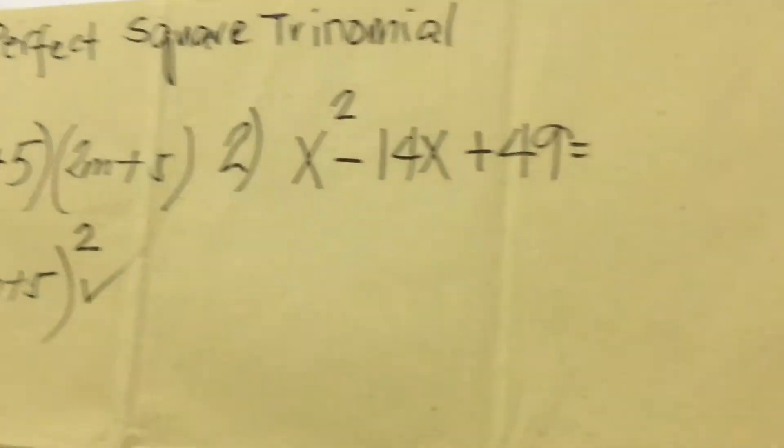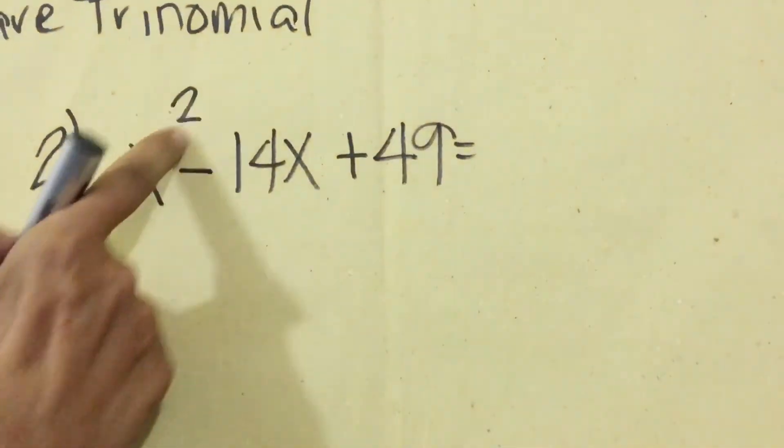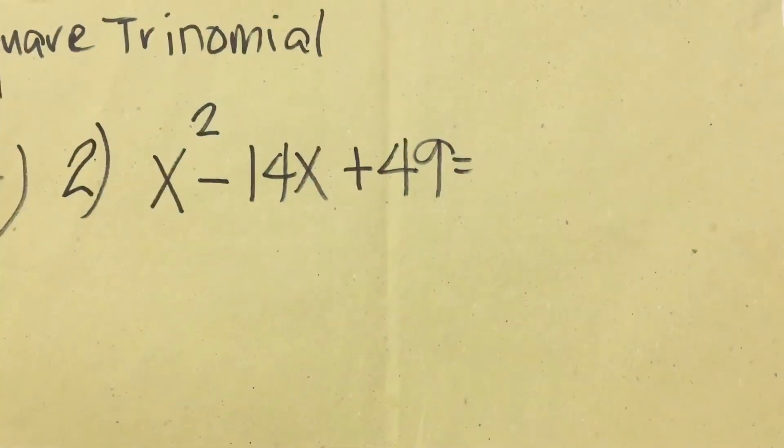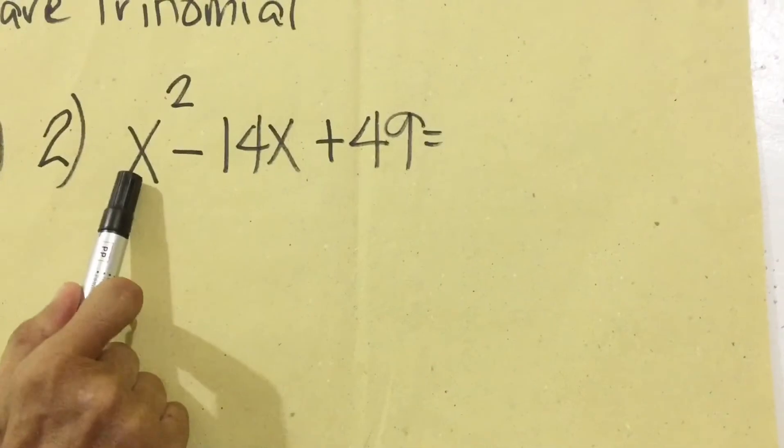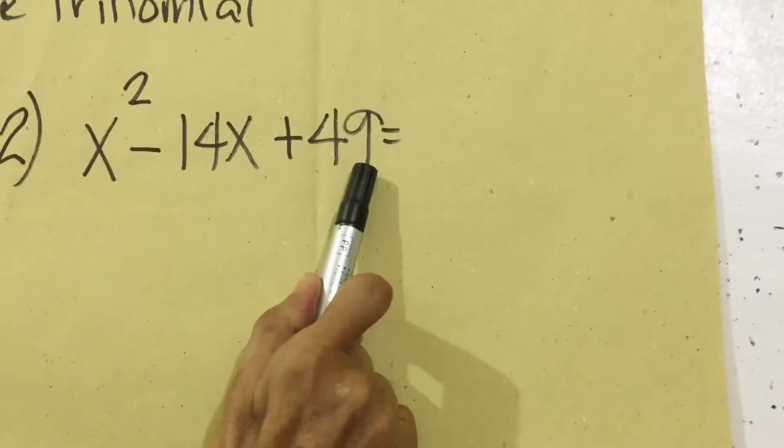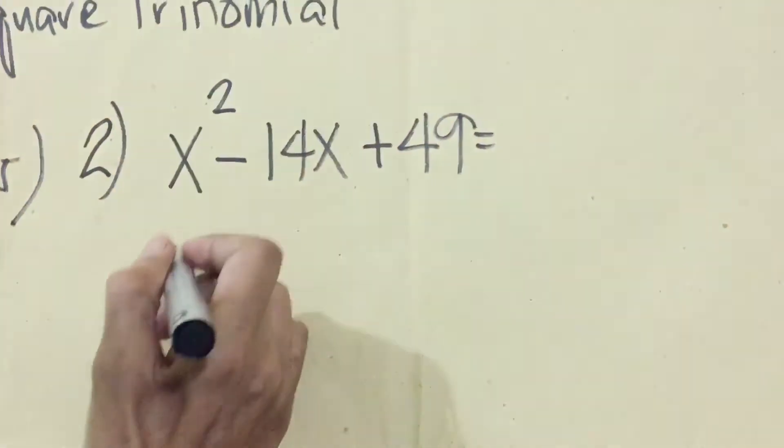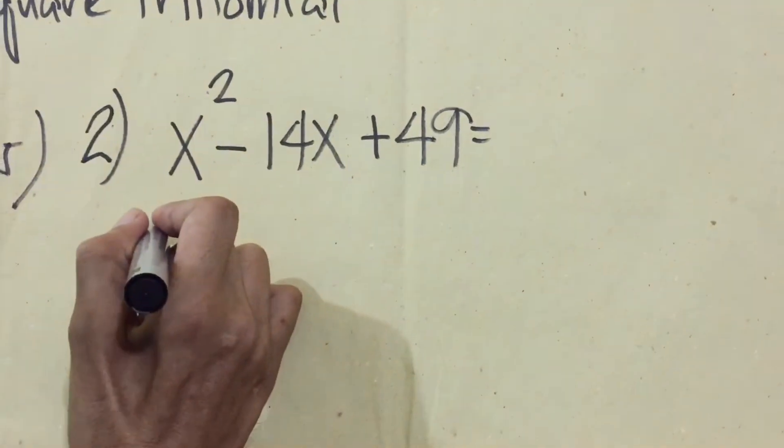Another example we have here: x² - 14x + 49. To determine if this is a perfect square, we're going to get the square root of x and also the square root of 49. The square root of x² is x.